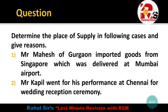Point B: Mr. Kapil went for his performance at Chennai for a wedding reception ceremony. Kapil is going to perform, so we apply the artistic performance rule. The place of supply is the place of performance — he is performing at Chennai. Therefore, the place of supply is Chennai. Reason: In case of artistic performance, the place of supply is the place of performance.